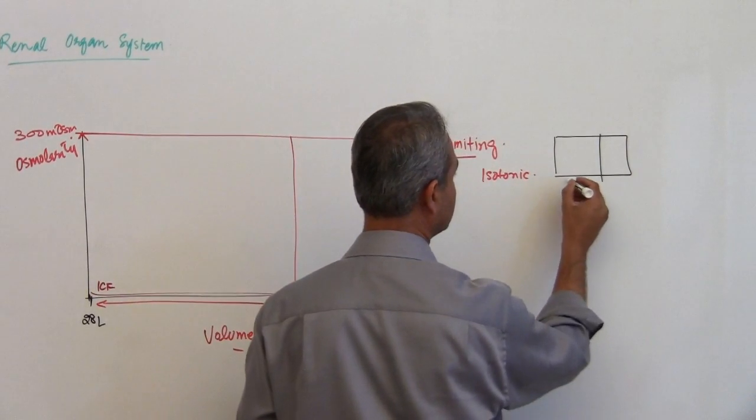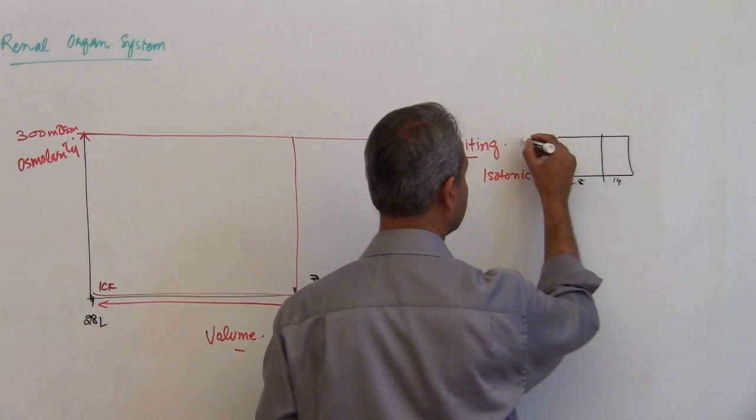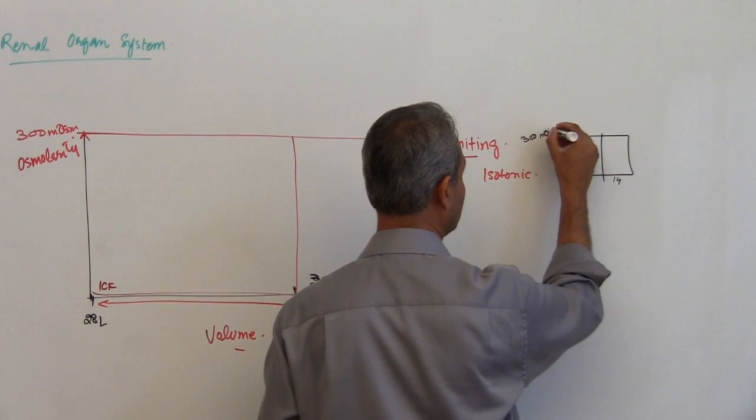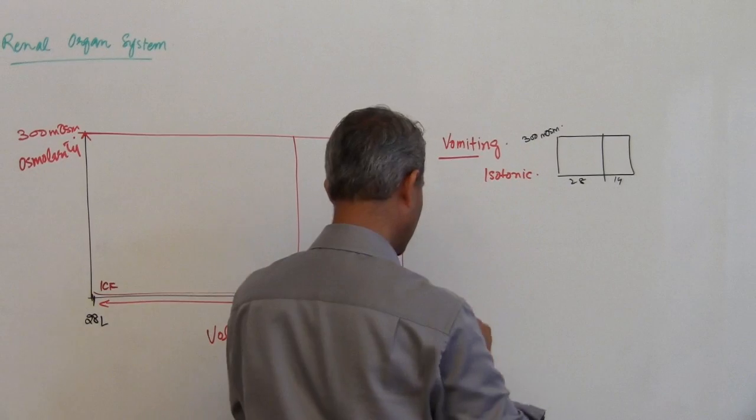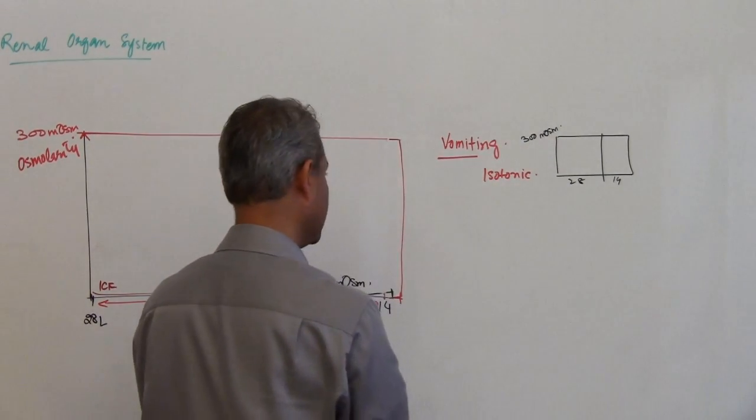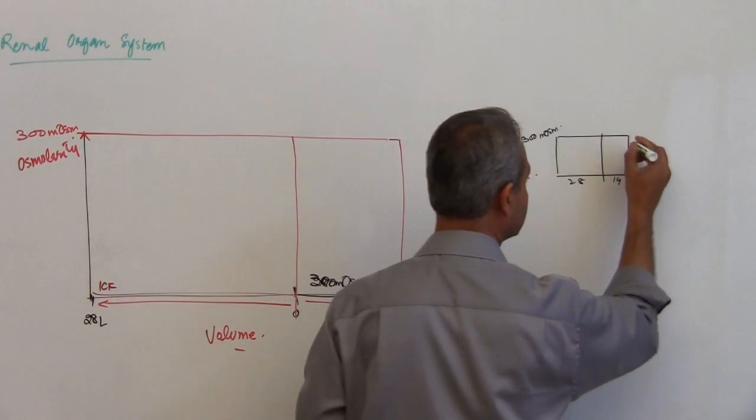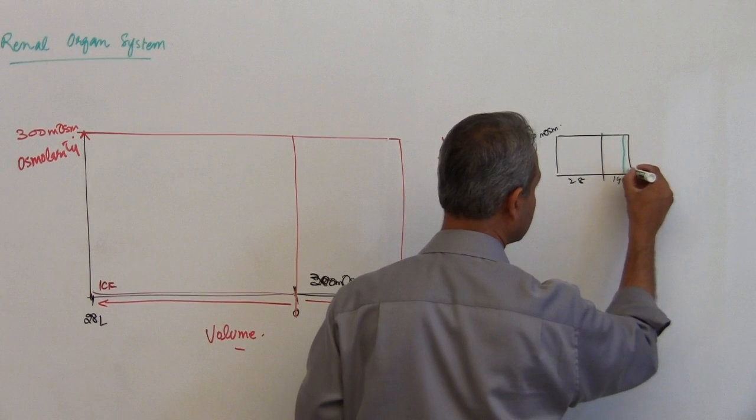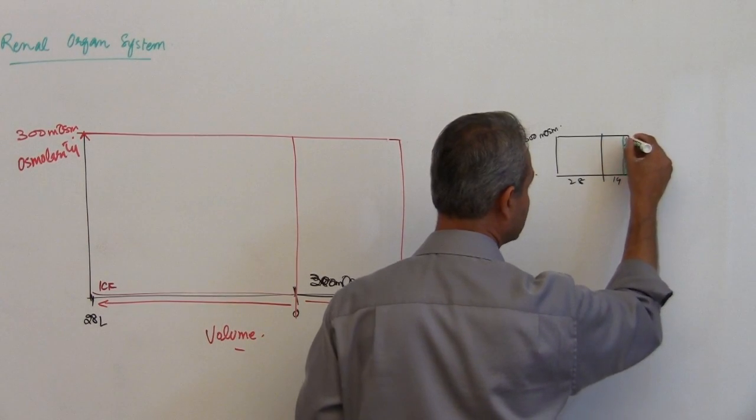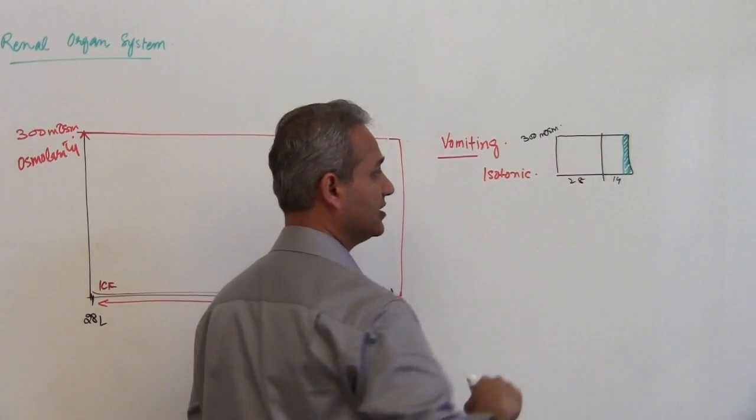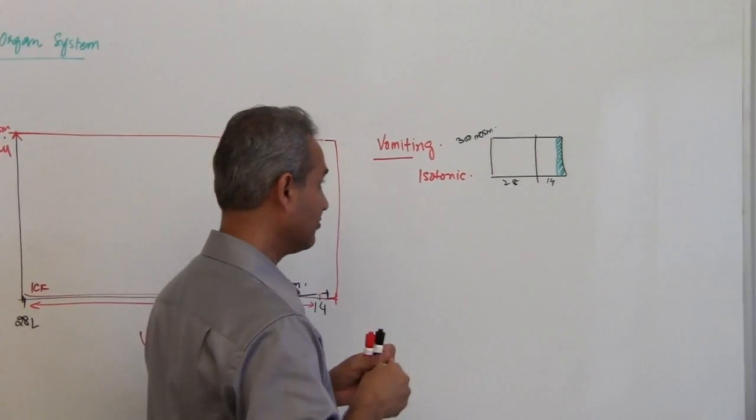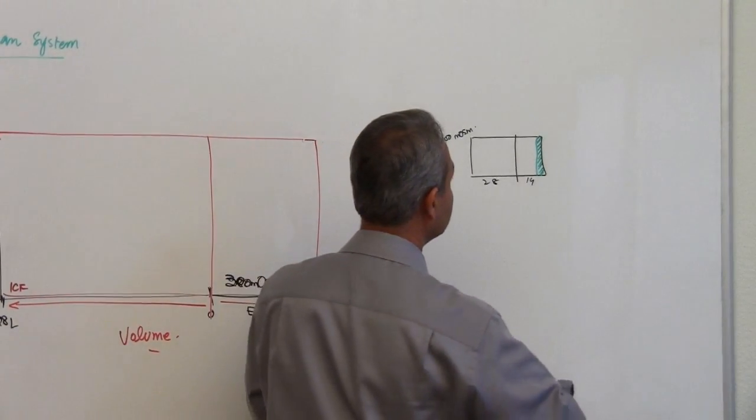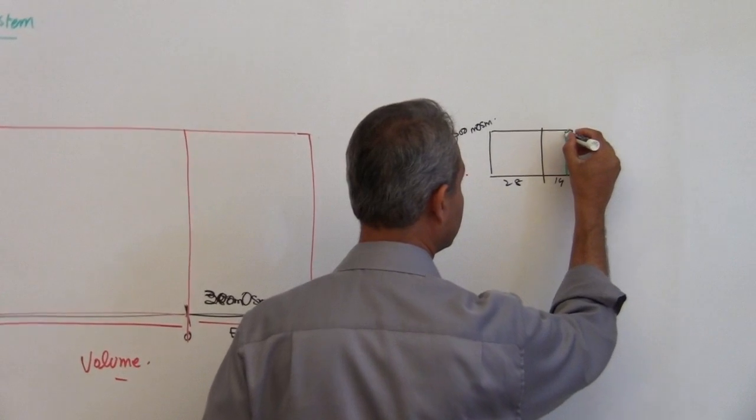This was normal: 28, 14, 300 milliosmoles. And what we got was in case of vomiting and diarrhea, we lost isotonic solution. Osmolarity stayed the same.